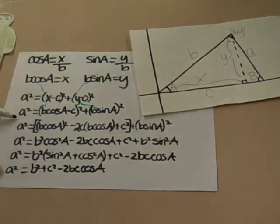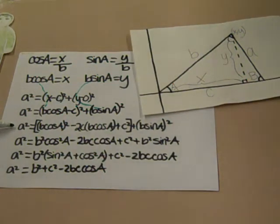By foiling, we get A squared equals B cosine A squared minus 2C B cosine A plus C squared plus B sine A squared.